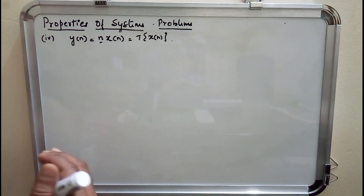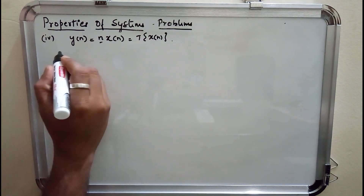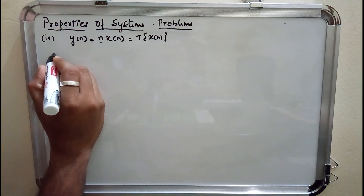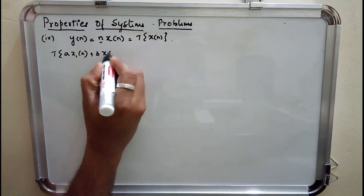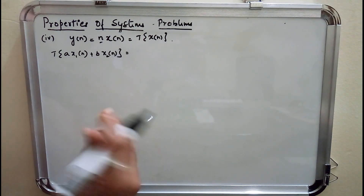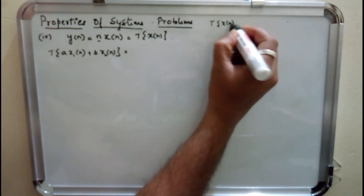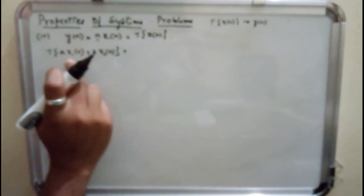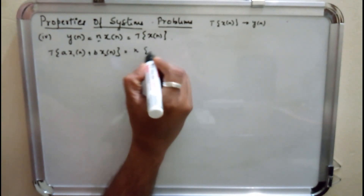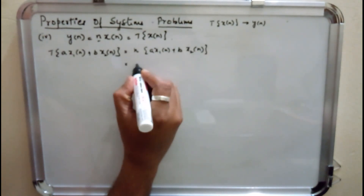Now solving different properties of our system — first one is the linearity property. From the basics, linearity property states that if the input is a weighted sum of two or more signals, the output is the weighted sum of responses to individual signals. If transformation on x(n) gives y(n), then if input is a·x1(n) plus b·x2(n), I need to replace x(n) by this value.